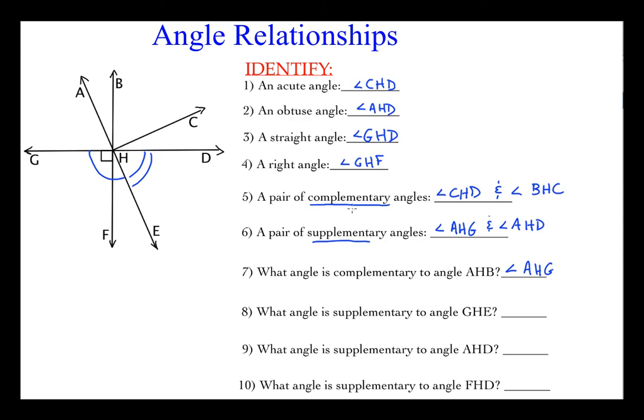So that answer is angle DHE. Cool. Number nine: what angle is supplementary to angle AHD? Angle AHD—identify it first. Its supplement is right here, angle AHG. As you can see, those, when combined with one another, form a straight line.